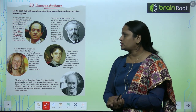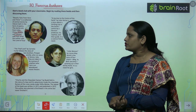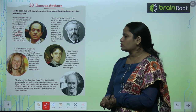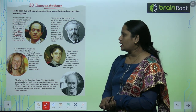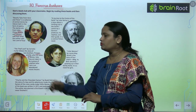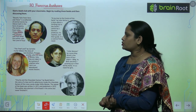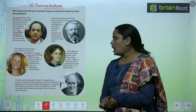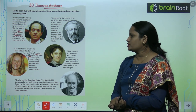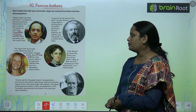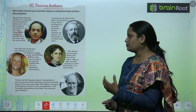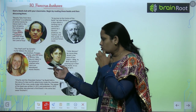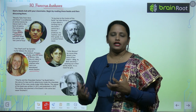The third one is The Thief Lord by Cornelia Funke. It follows the story of two brothers, Prosper and Bo, who run away to Venice, Italy. They are taken in by a group of orphans who live in an abandoned movie theater.